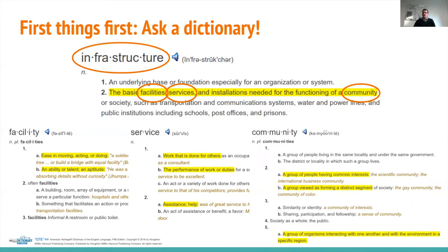Finally, we can look at the community — I think it's something that we all know. It is a group of people having a common interest, a group viewed as forming a distinct segment, and it can also be a group of organisms interacting with one another and with the environment in a specific region, where the specific region in this case is an area of interest and activity — which in our case is science, a specific research domain, or the support of research with software services.